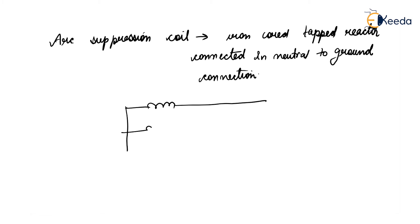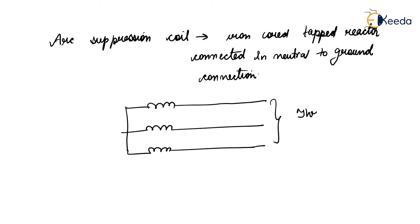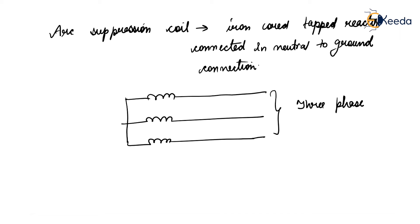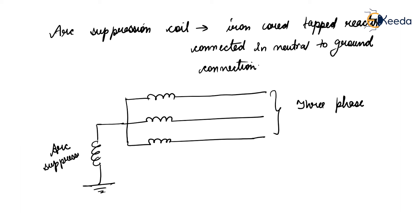In the figure for the three-phase system — phase A, phase B, and phase C — the iron core taped reactor is connected neutral to ground, and this is known as the arc suppression coil.